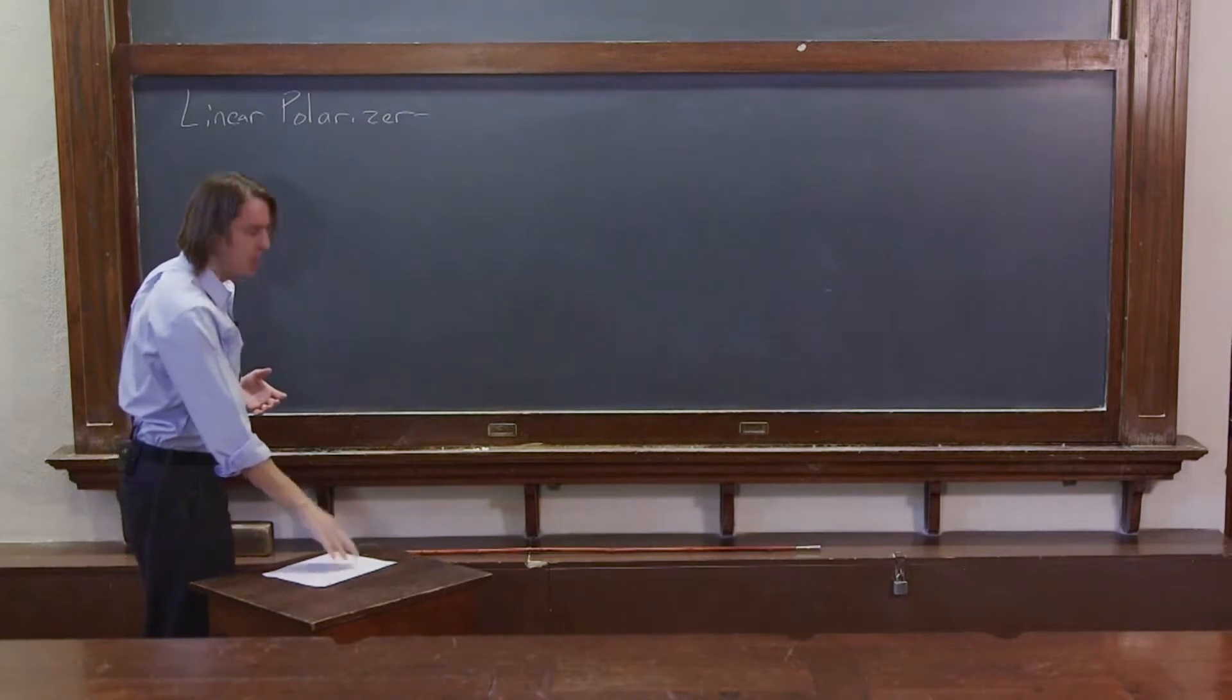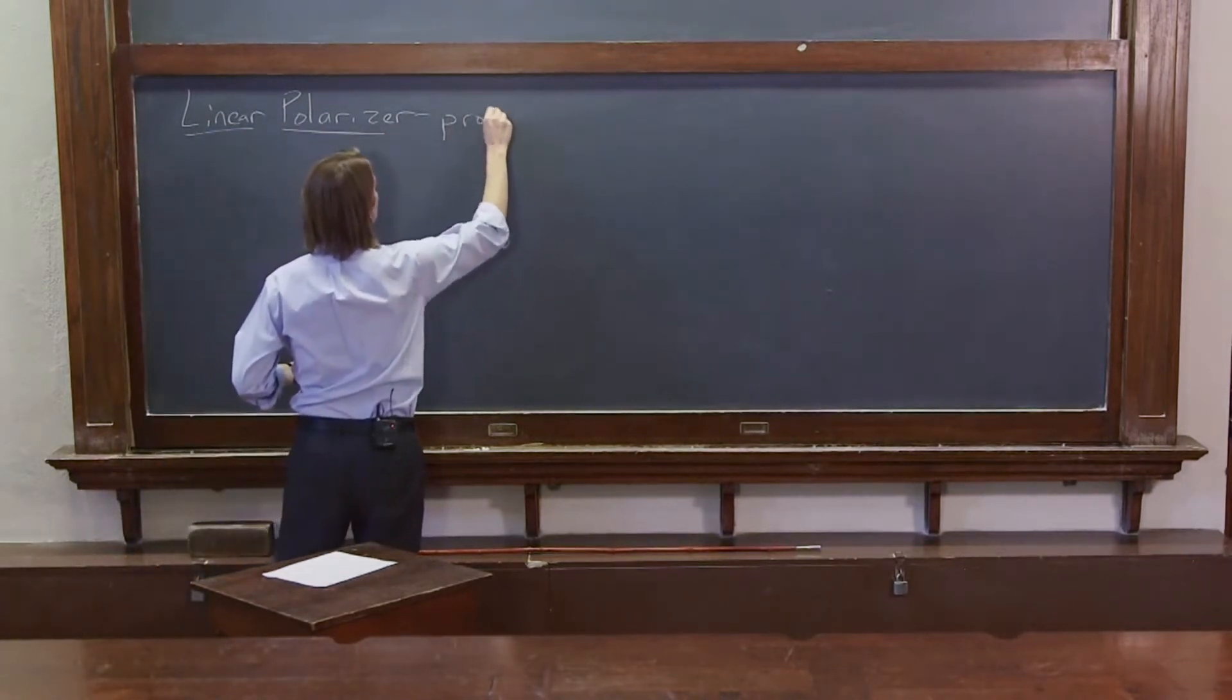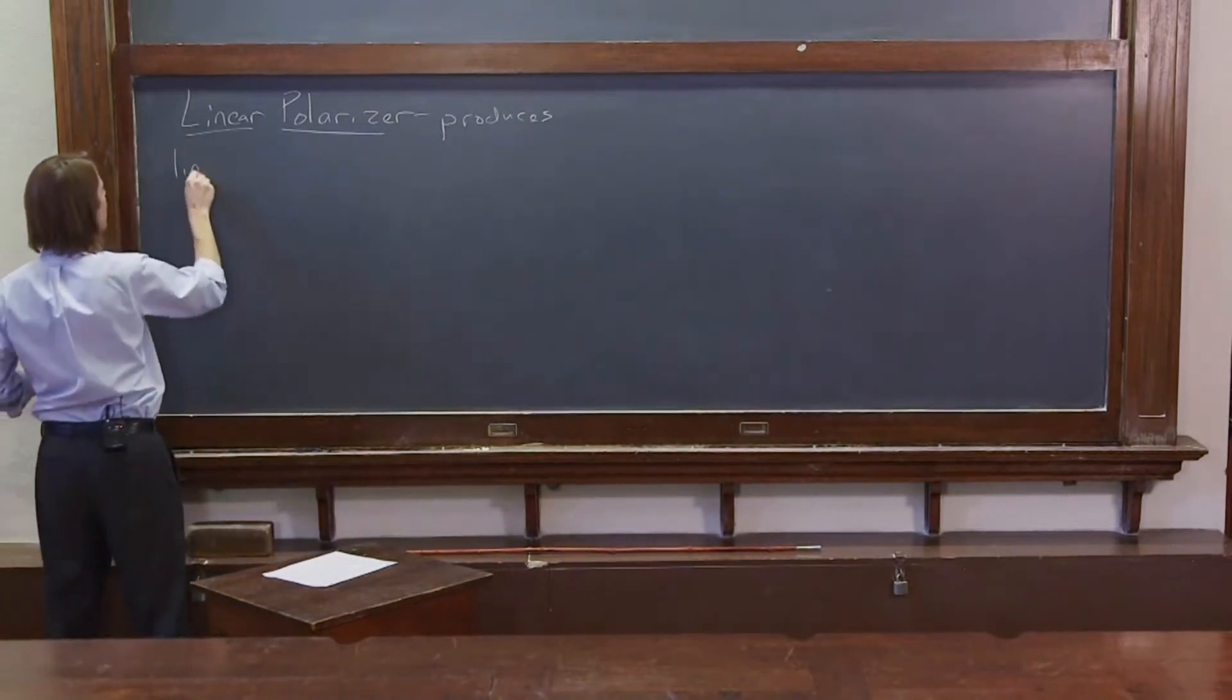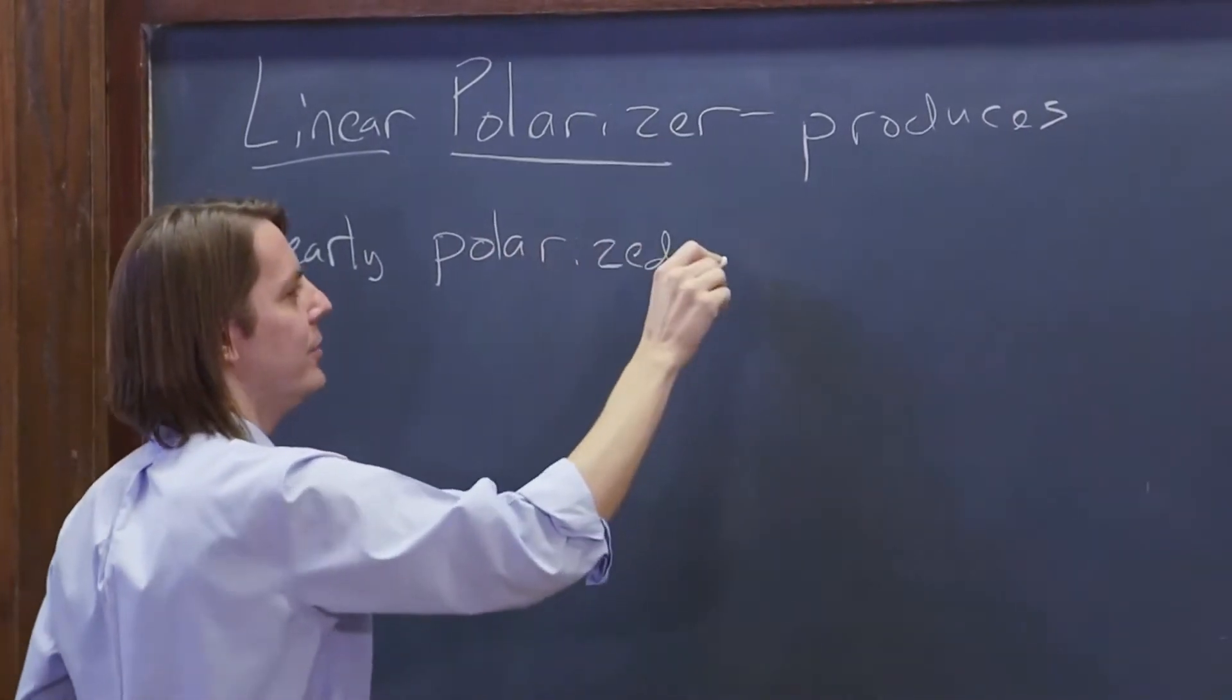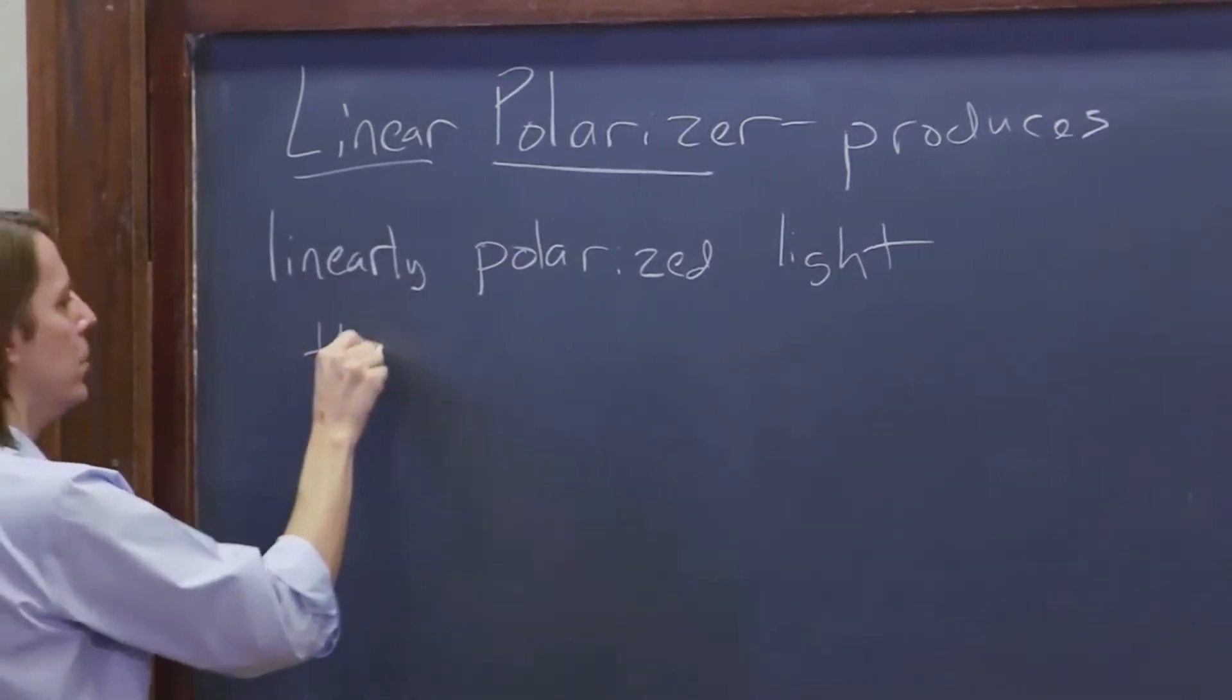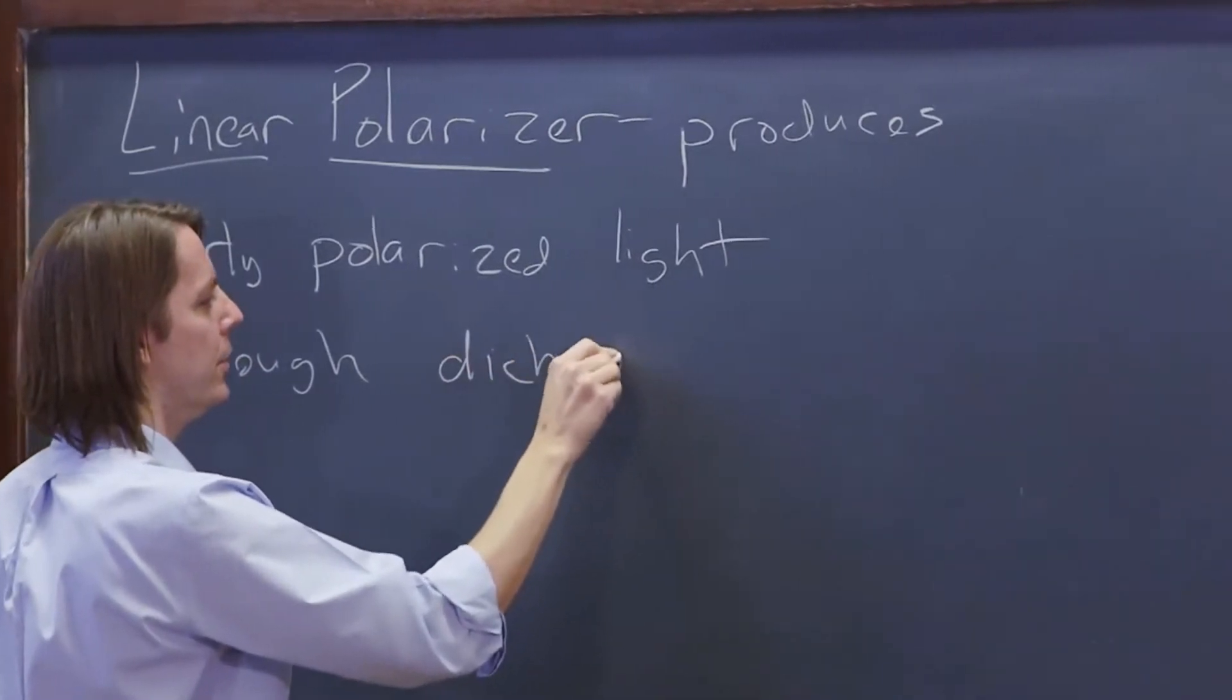Okay, a linear polarizer produces linearly polarized light through dichroism.